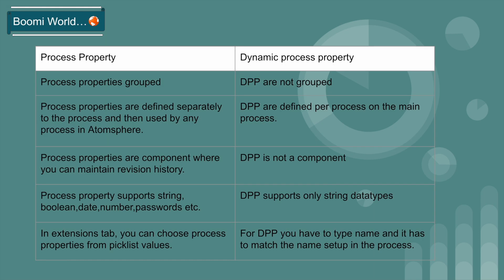We'll see some main differences between process property and dynamic process property. Process properties are grouped such that a process property can have any number of named values and referenced as a process property. Dynamic process properties are referenced by their dynamic process property name. Dynamic process properties are not grouped.